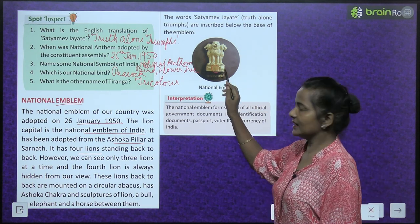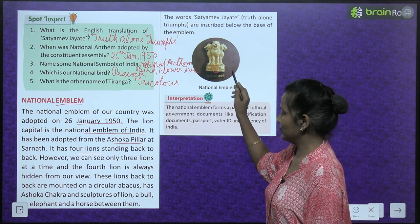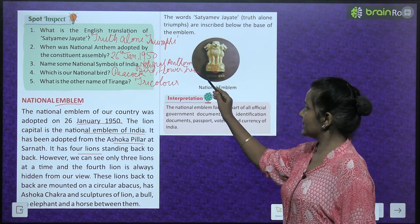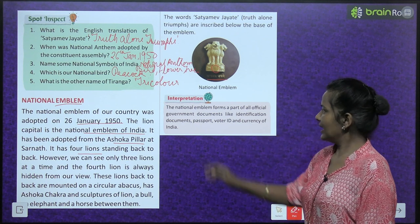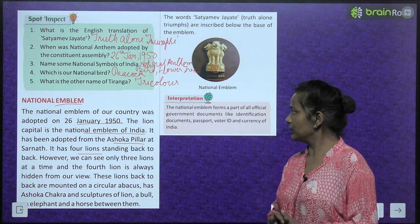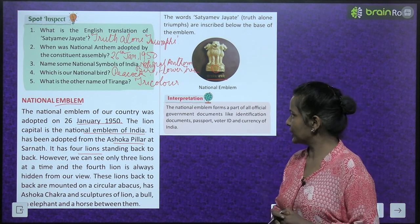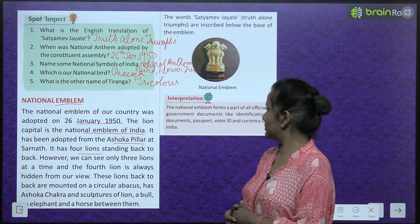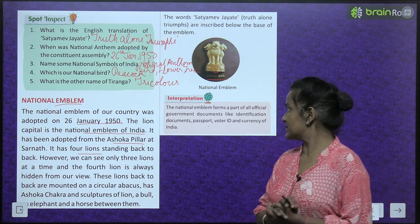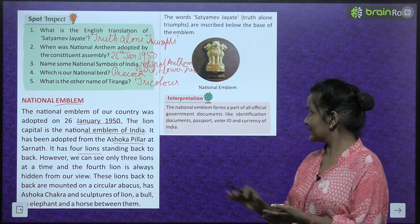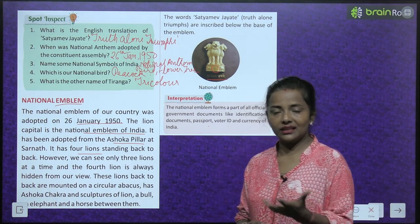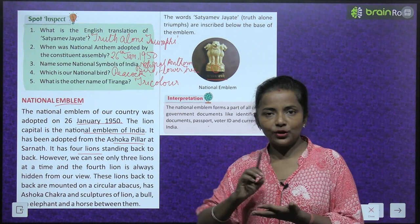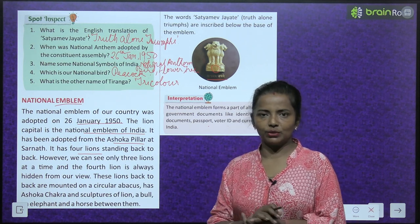The words 'Satyameva Jayate' — Truth Alone Triumphs — are inscribed below the base of the emblem. The national emblem forms part of all official government documents like identification documents, passport, voter ID, and currency of India. It is also printed on rupee notes.